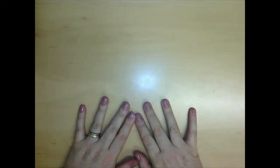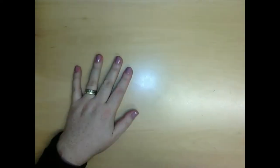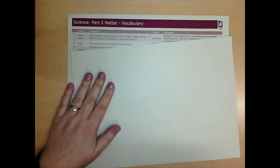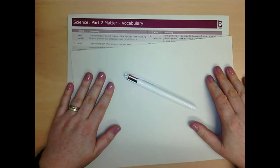First of all, you're going to need to get yourself a lovely, clear, flat space to work. Then collect your knowledge organiser, a piece of paper, and a pen. I like a four colour clicky pen so I can show my corrections.